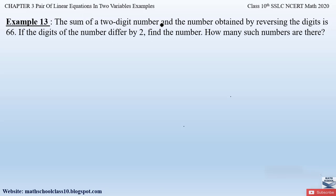Since we have a two-digit number, let's understand how it's formed. For example, take 54: here 5 is one digit and 4 is another digit. 5 is at the 10's place and 4 is at the 1's place, so 5×10 + 4×1 = 50 + 4 = 54. This is how a two-digit number is formed.